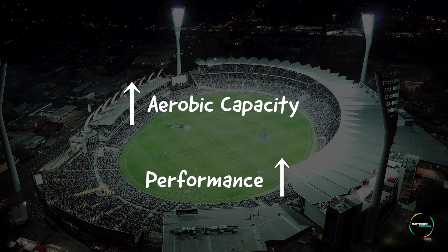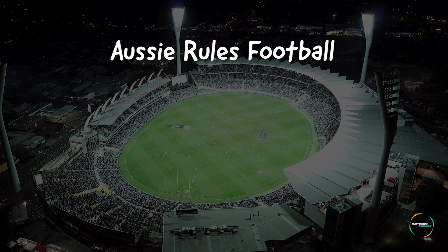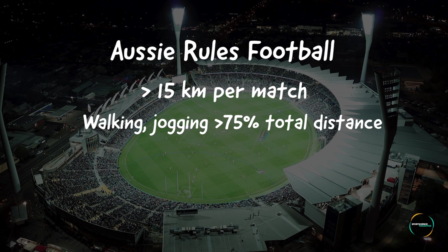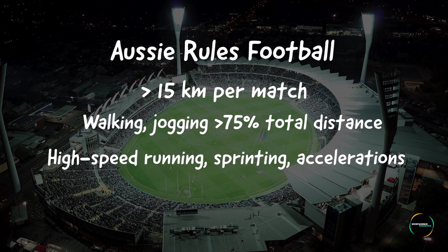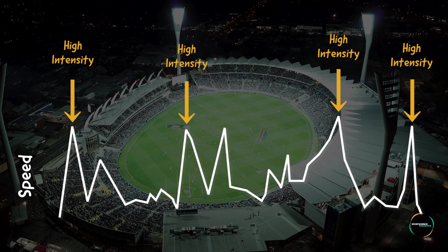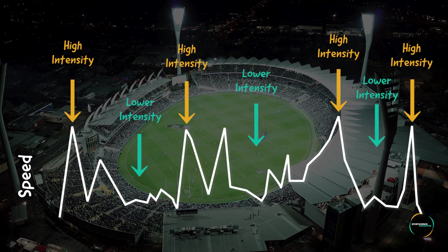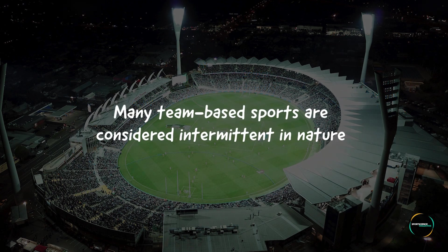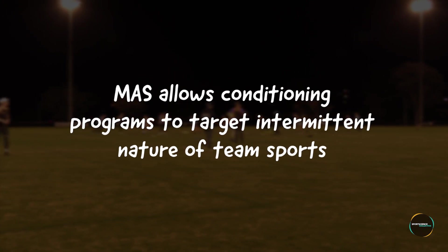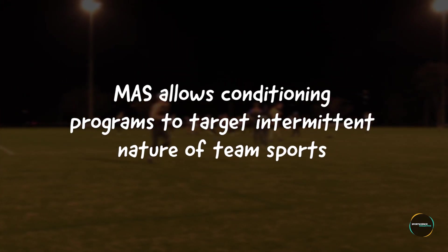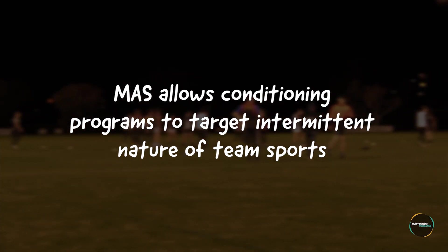Improving aerobic capacity might allow team sport athletes to perform at a higher level. Take for example an Australian rules football player — a footy player will cover upwards of 15 kilometres per match. The majority of this distance is completed where the aerobic energy system can supply the energy demand. A football player will also perform many high intensity efforts interspersed with lower intensity running, which is why football and many other team-based sports are considered intermittent in nature.